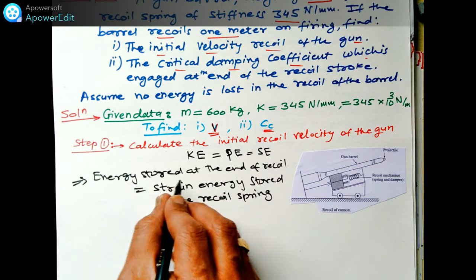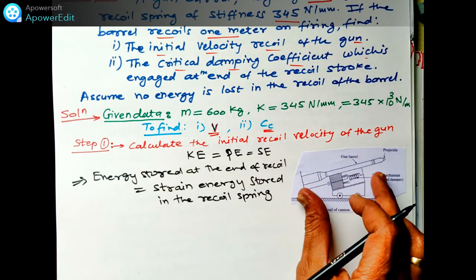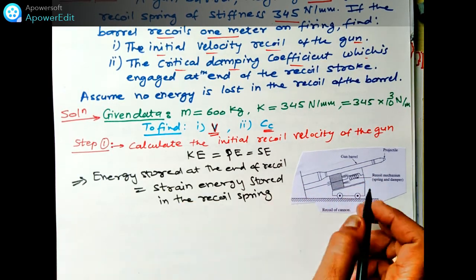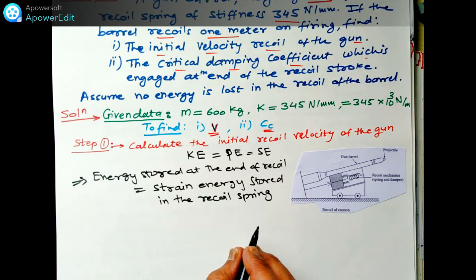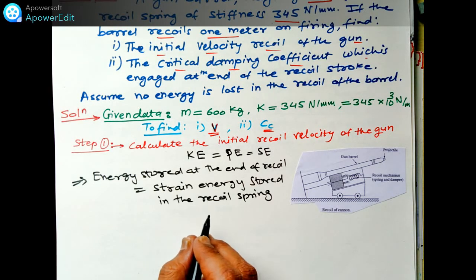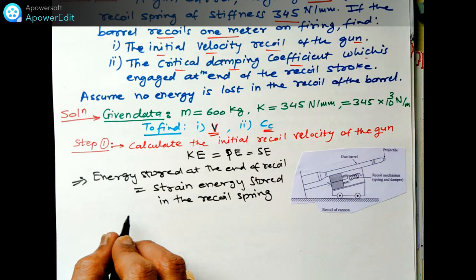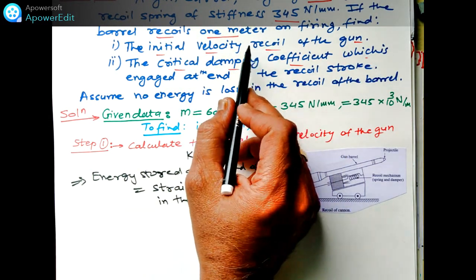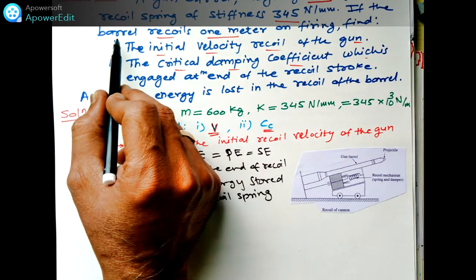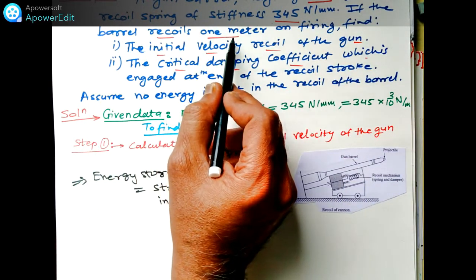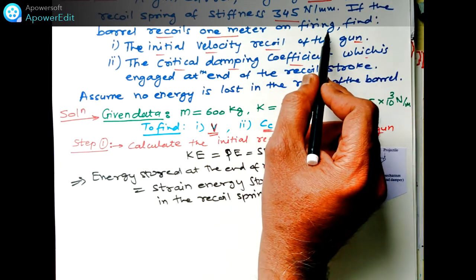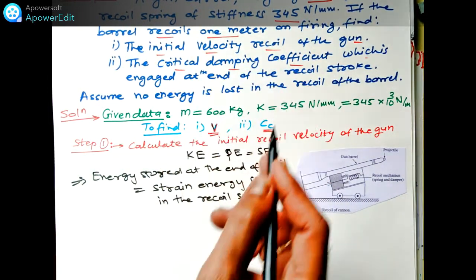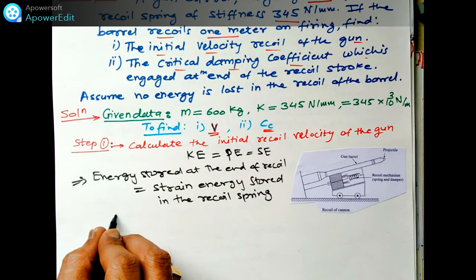This is the important relation. If we understand this, the strain energy stored inside this recoil spring can be found out. As given in the numerical — if the barrel recoils one meter on firing — when it fires it will recoil one meter. So the barrel deflection is one meter.